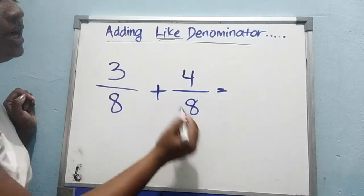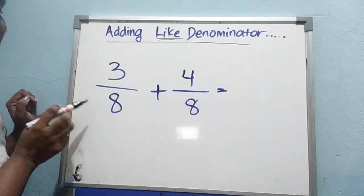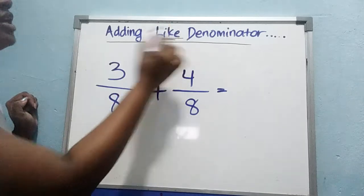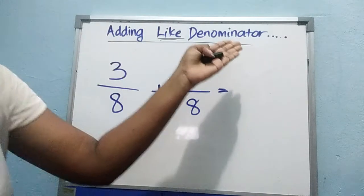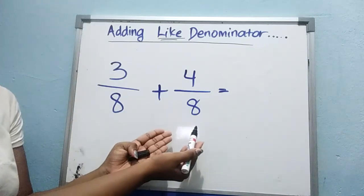So, this is the denominator. If you see, the denominator is the same. Same means we call it like denominator. Adding like denominators means adding fractions with the same denominator.